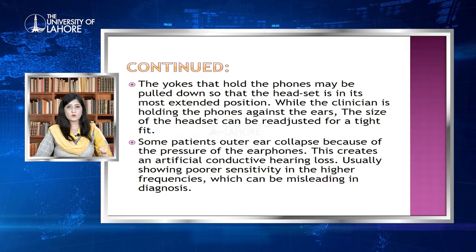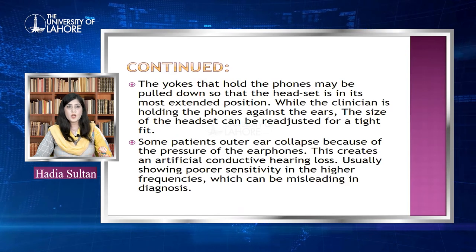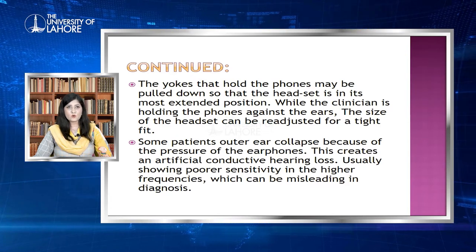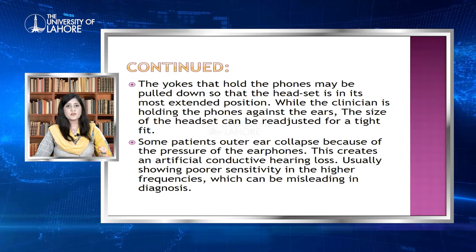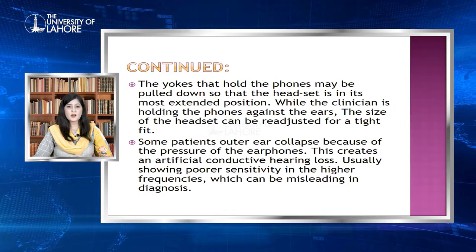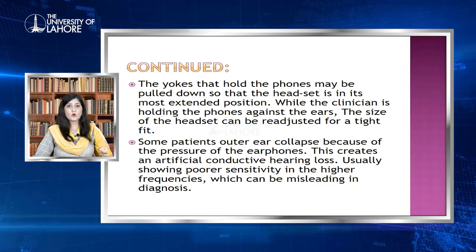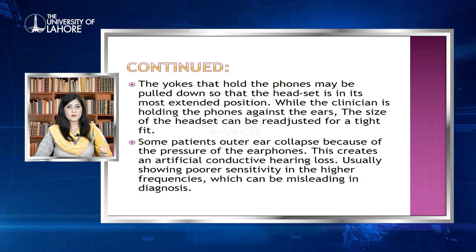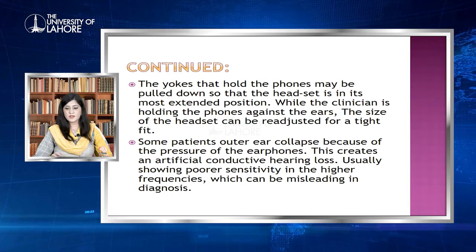The yokes that hold the phones may be pulled down so that the headset is in its most extended position. While the clinician is holding the phones against the ears, the size of the headset can be adjusted for a right fit. Some patients' outer ear may collapse during placement, causing an artificial conductive hearing loss which can mislead the diagnosis. If not placed properly, it can cause the appearance of conductive hearing loss — which would be a wrong diagnosis.